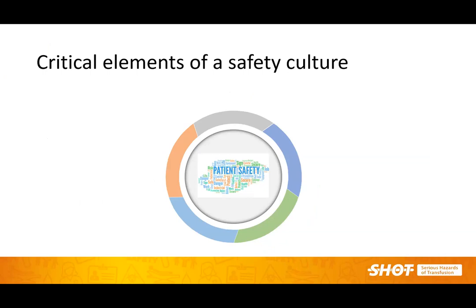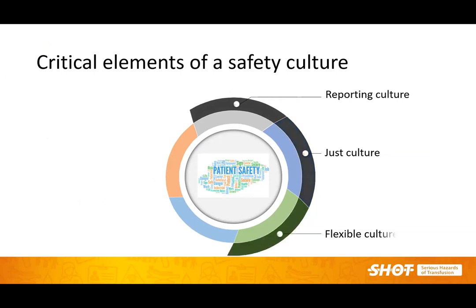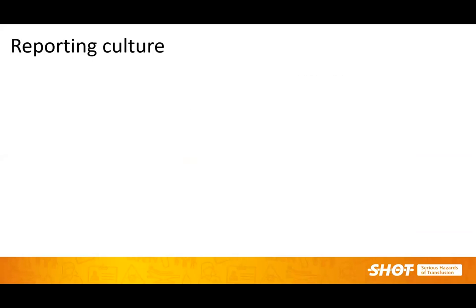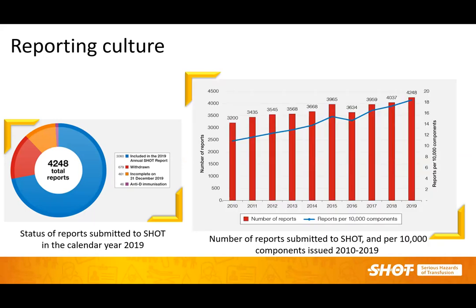These are the essential critical elements of any great safety culture. First and foremost, we need a good reporting culture where we are ready to share and learn from each other. It is also a just culture. There is a need to be flexible, adaptable, and to embed the lessons we are learning, but equally also have a questioning culture instilled in our organisations so that we question each other's practices and learn from each other. These figures show we do have a good reporting culture in the UK — more than 4,000 reports submitted to SHOT in the last year, roughly 18 reports per 10,000 components issued.